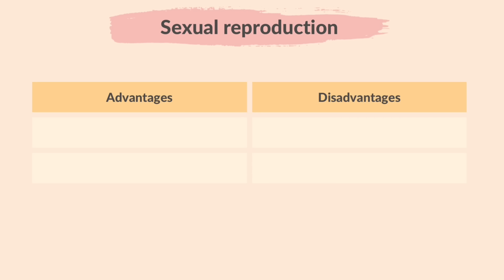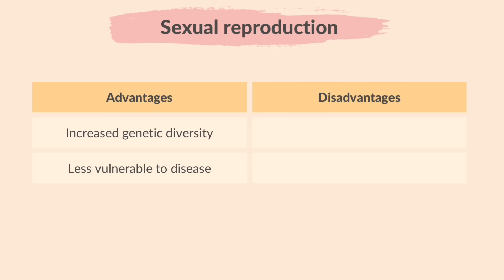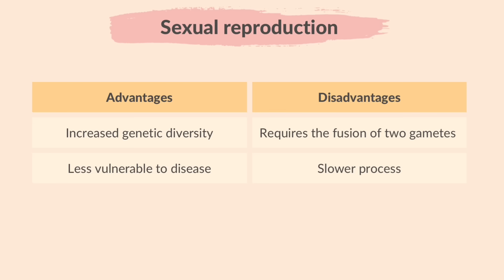What are the advantages and disadvantages of sexual reproduction? Advantages include increased genetic diversity — there is variation among offspring and therefore they are more adaptable to a changing environment and less vulnerable to disease. Disadvantages are that it requires the fusion of two gametes, so it requires the time and energy to find a mate. It is also a slower process, reducing the speed of reproduction and potentially leading to lower production yields.